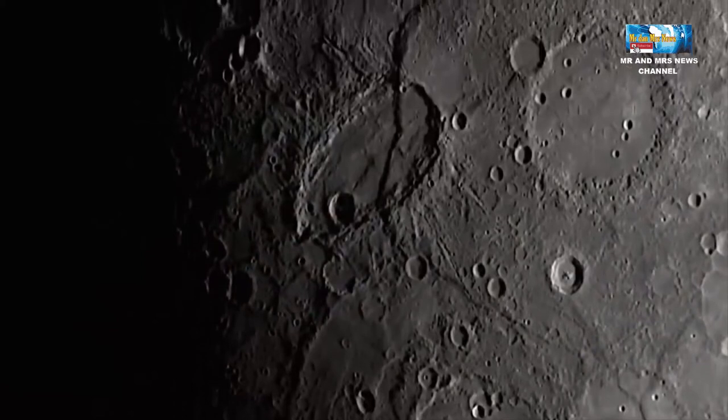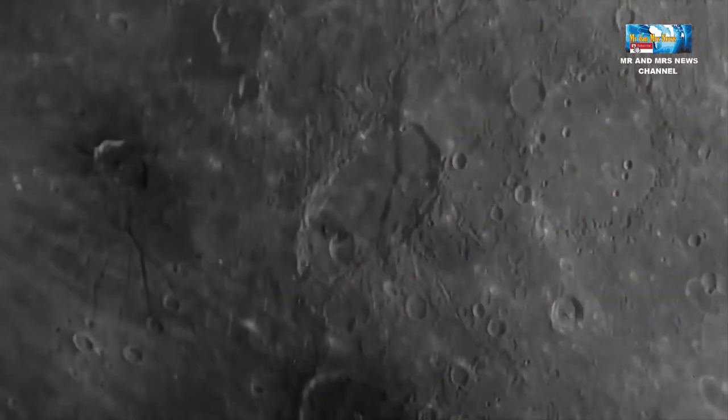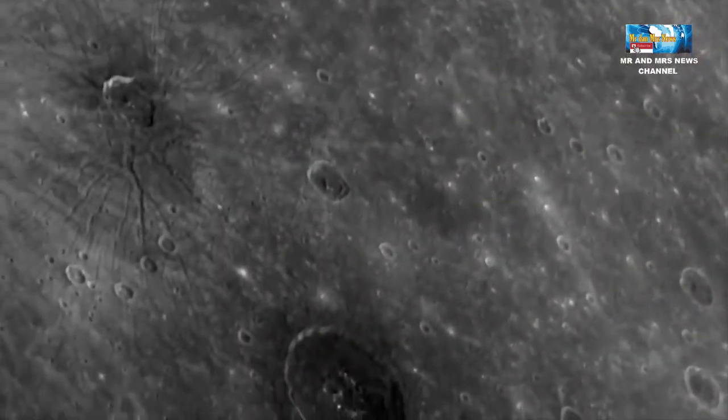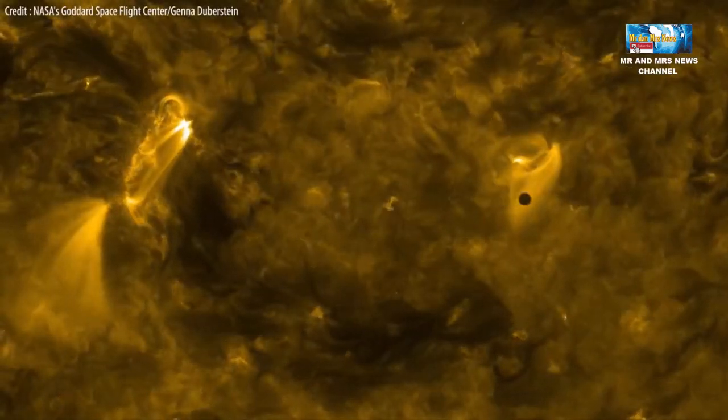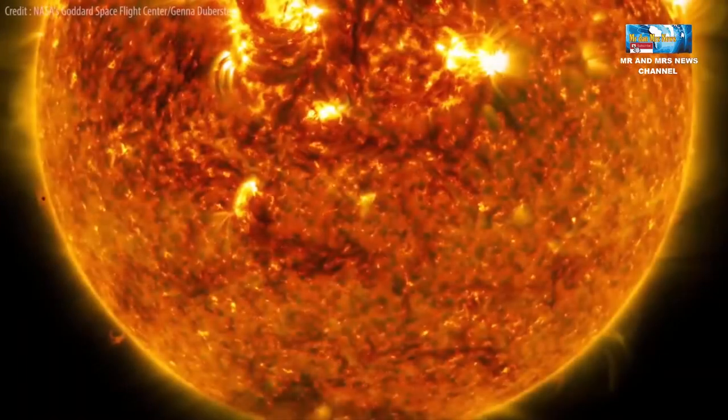Merkurius memiliki banyak kawah akibat dari tumbukan meteoroid dan komet. Karena berada dekat dengan matahari, Merkurius menjadi planet yang tidak memungkinkan untuk memiliki satelit.